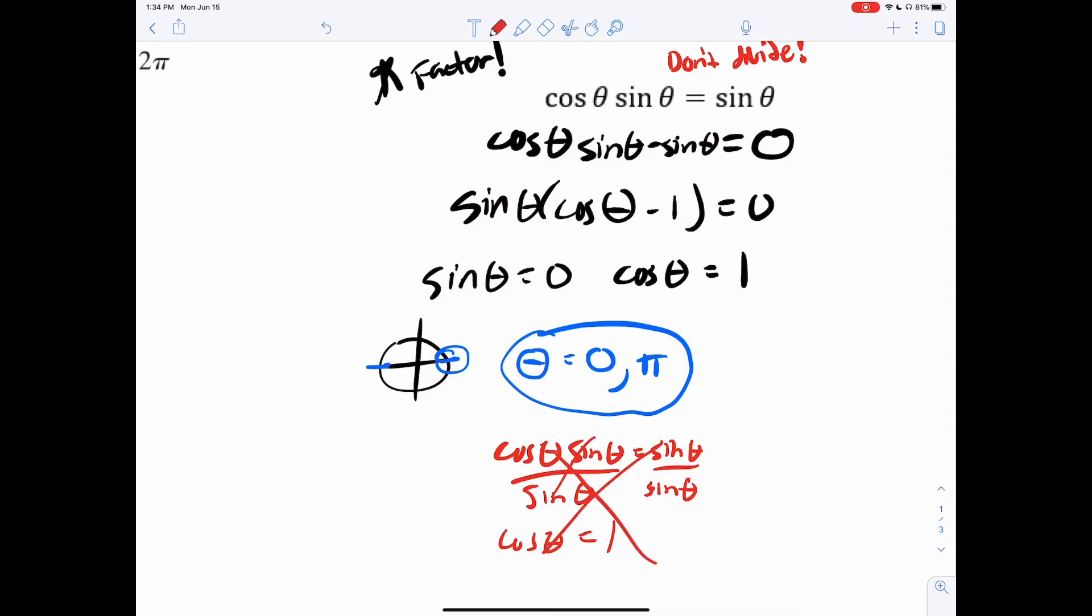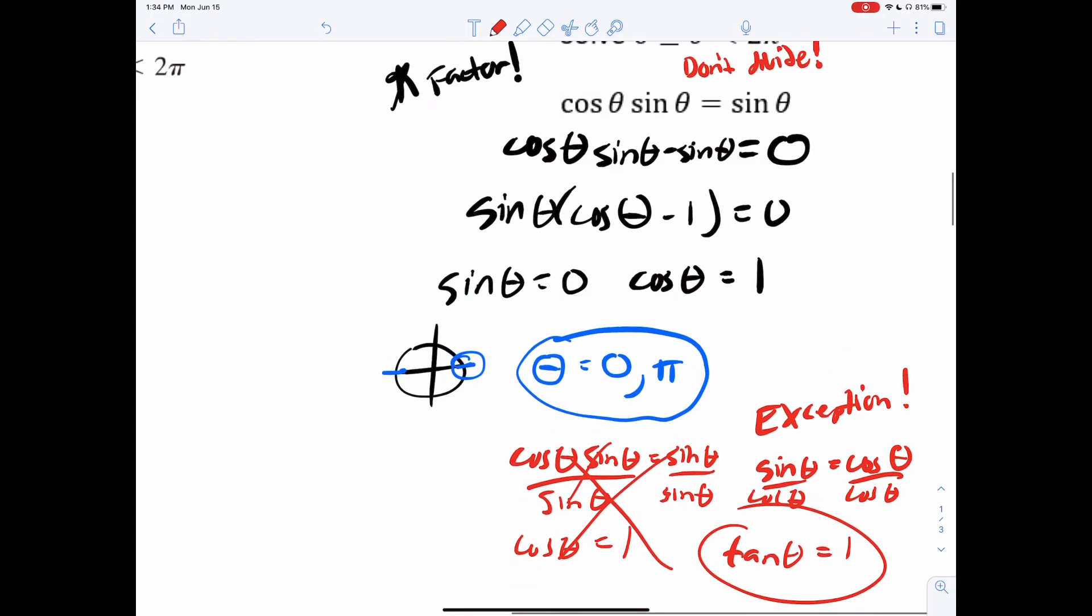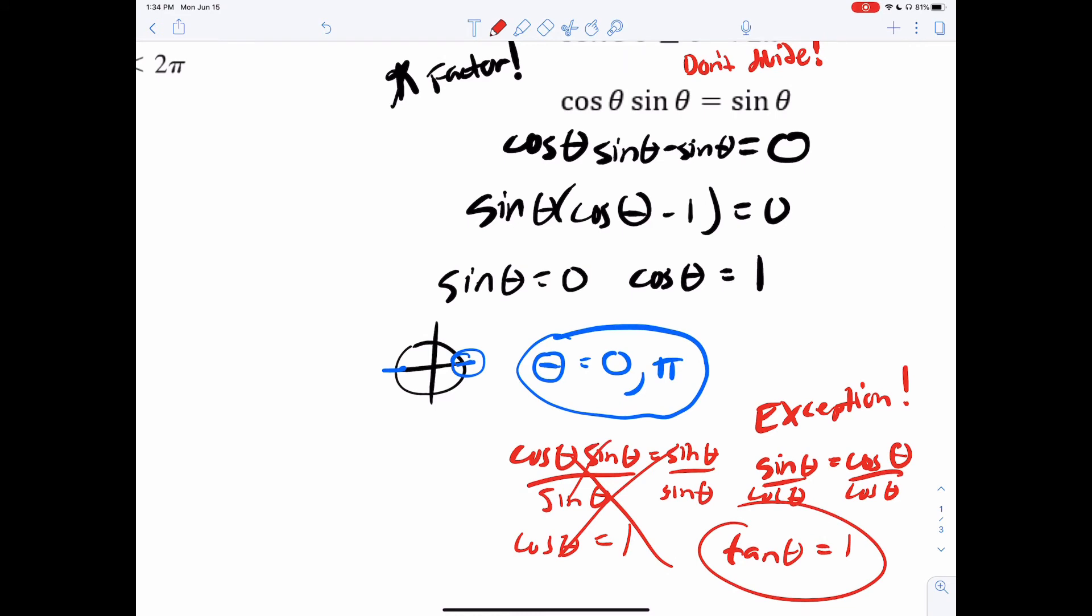The exception to this rule is if you have something like this, like let's say you have sine theta equals cosine theta. In this example, you actually could divide by cosine. And that's because you're going to create this tangent right here. And then that's going to be easier to solve. So in that case, you could do it. But an example like the one above, make sure you simply don't divide out that sine function.